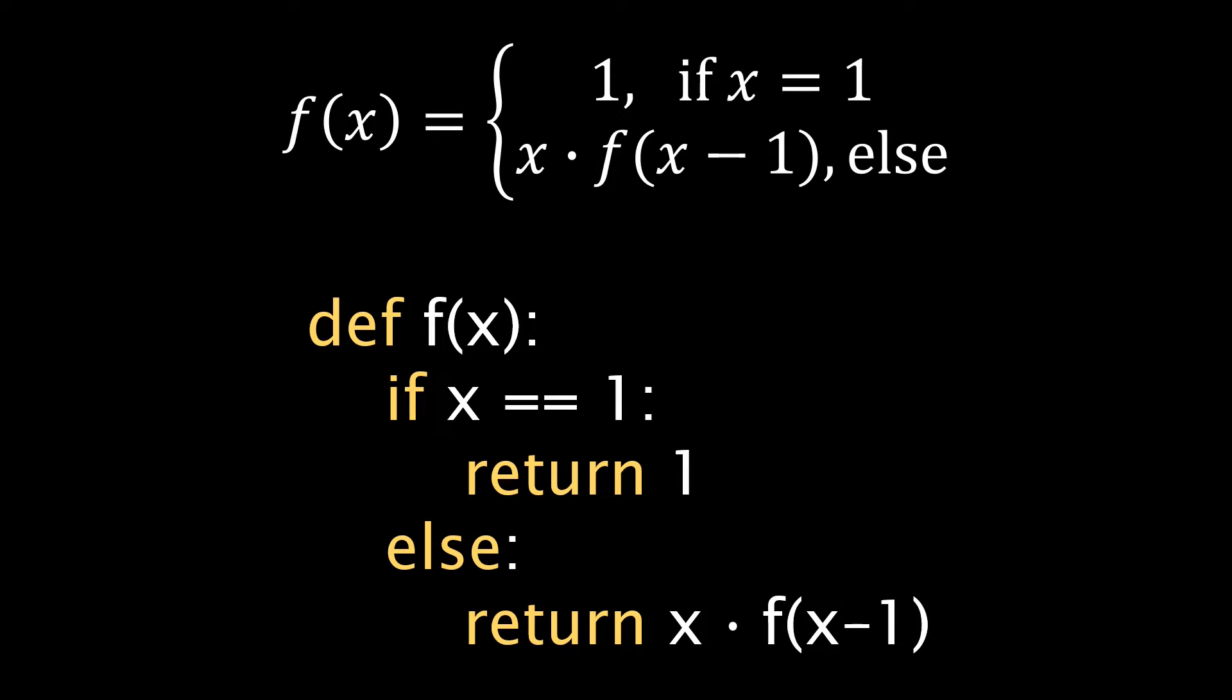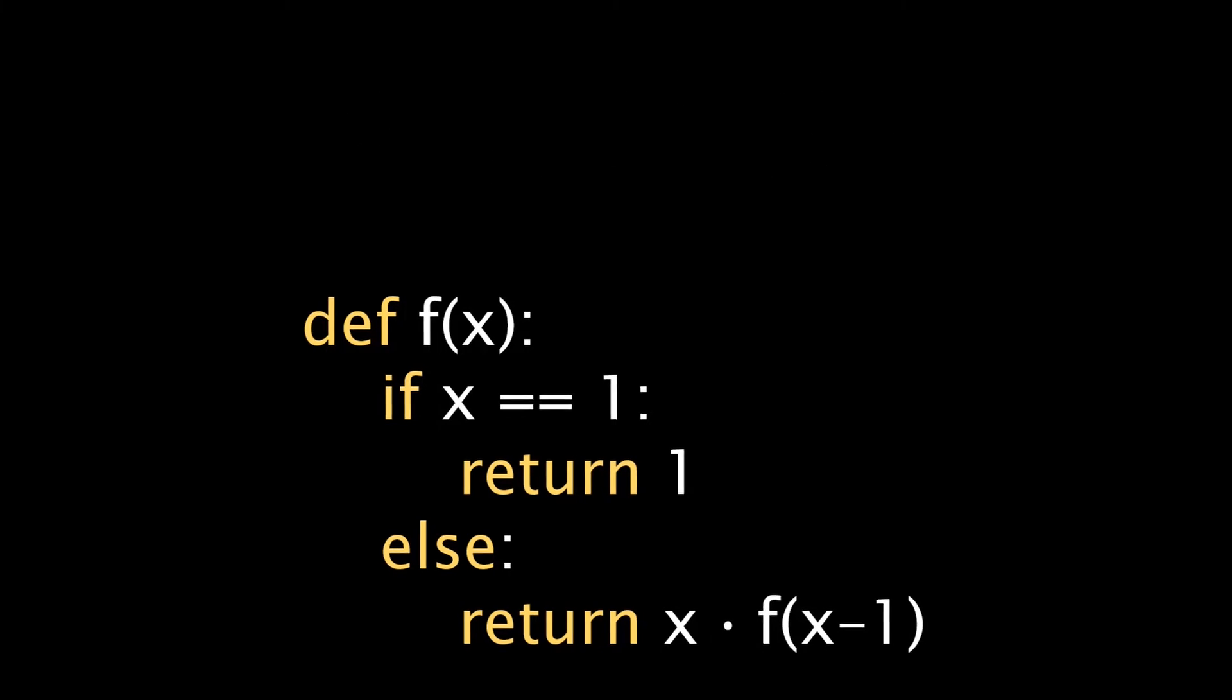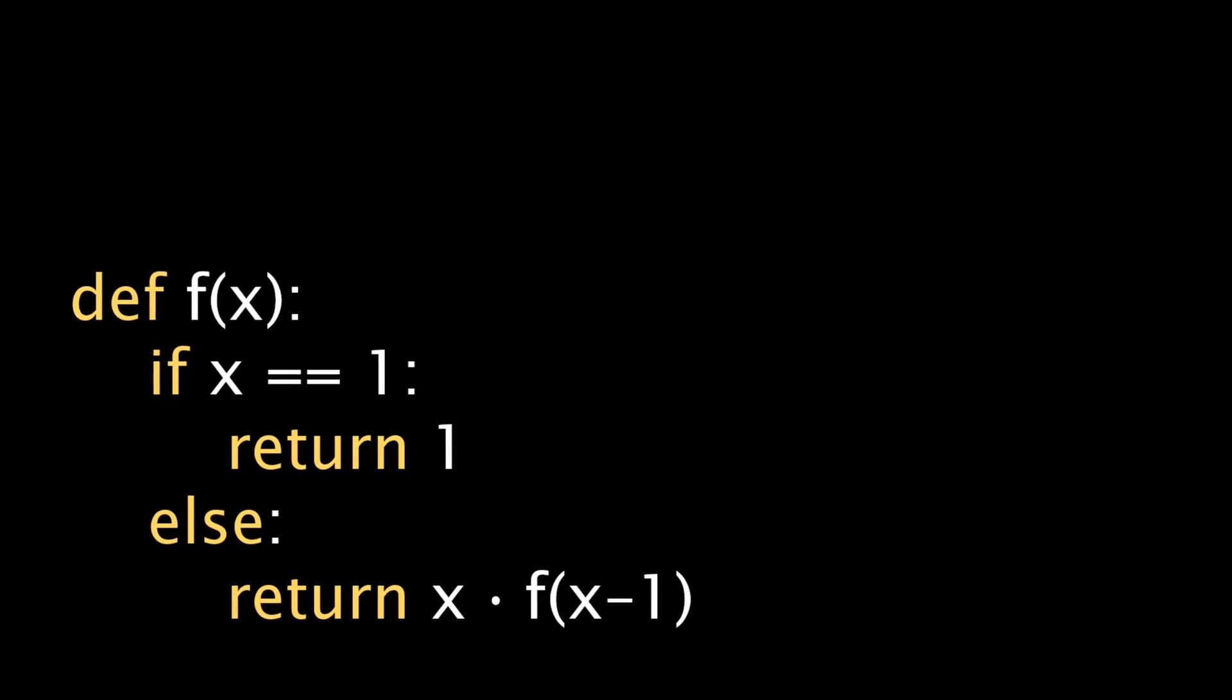An algorithm that splits up a problem into subproblems and invokes itself on the subproblem is called a recursive algorithm. A recursion ends when reaching a simple base case that can be solved directly. Let's see what happens if we call our function f with an input of 5.